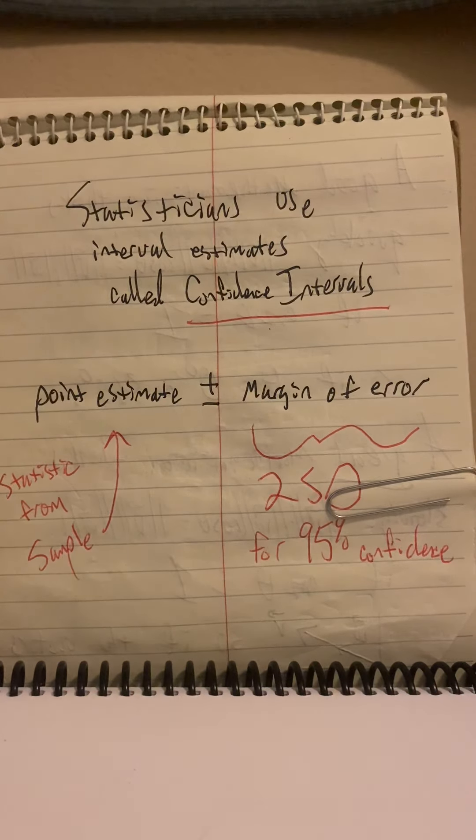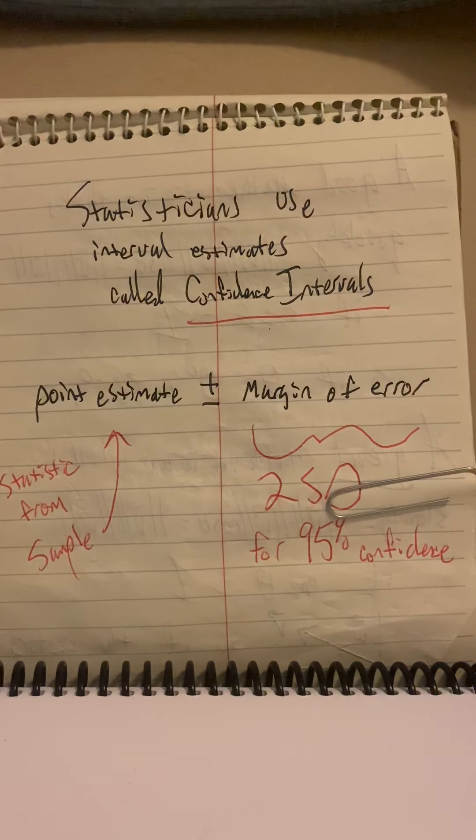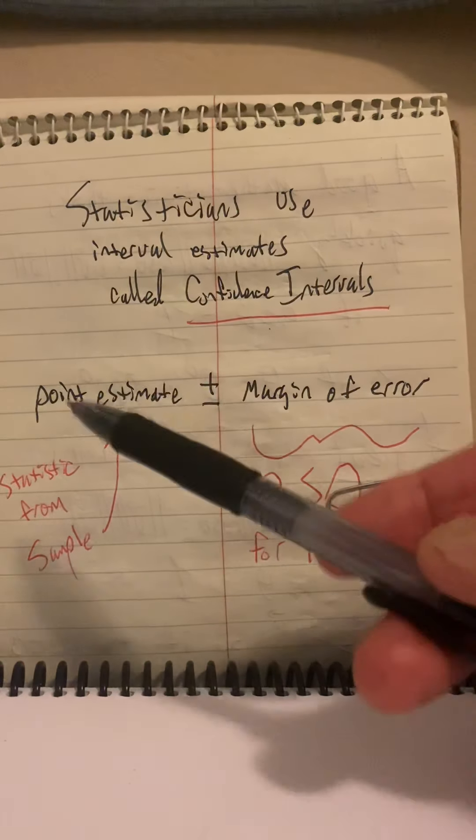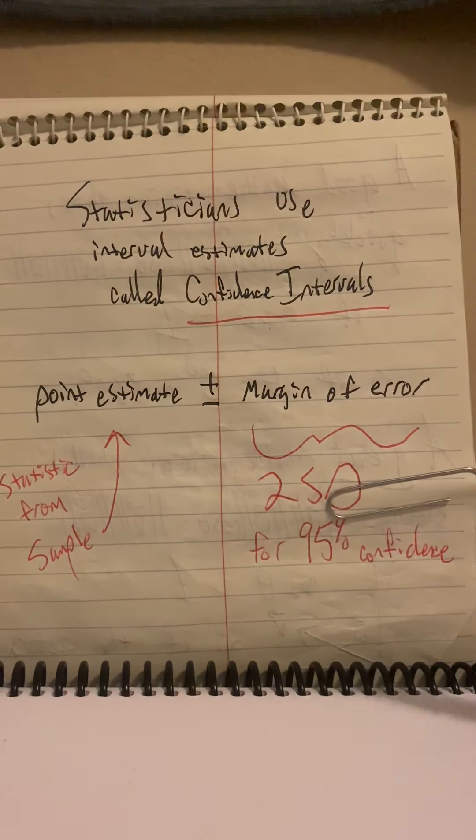Statisticians use interval estimates that they call confidence intervals. And the way they produce these things is they take a point estimate, like Fatima's, and add and subtract to that point and from that point estimate a margin of error. And that creates an interval because when you subtract, you get a lower number. And when you add, you get a higher number.